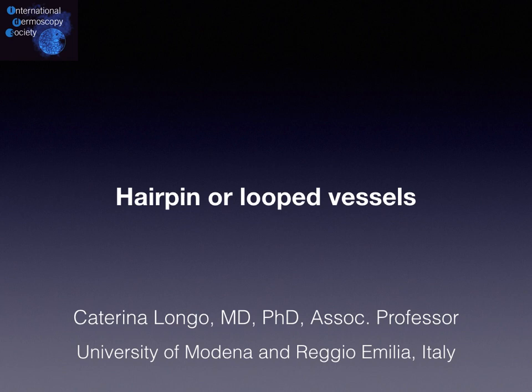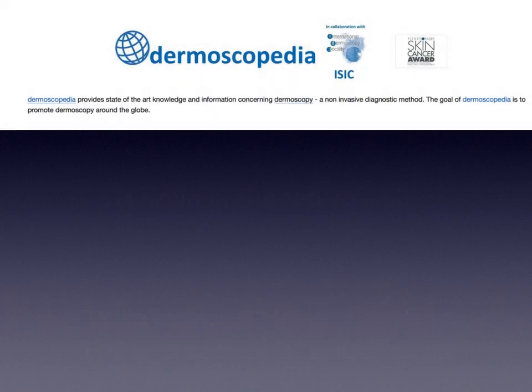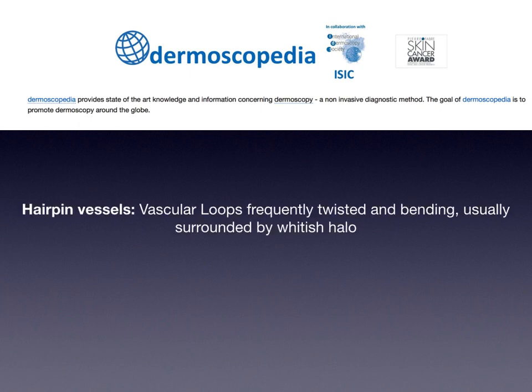Hello, my name is Katerina Longo and I'm going to talk about hairpin or looped vessels, a topic that I really like. If you want to know the definition, we can take a look at Dermoscopedia on the website of the International Dermoscopy Society in collaboration with other partners. Hairpin vessels have been defined as vascular loops, frequently twisted and bending, usually surrounded by a whitish halo.